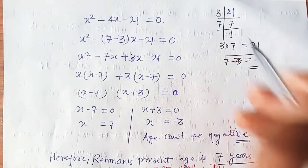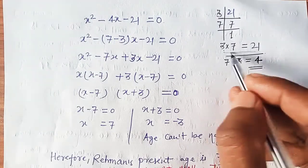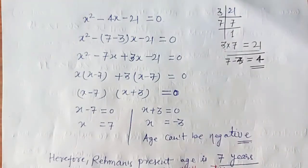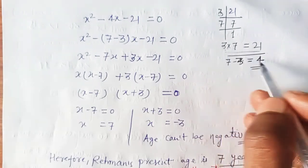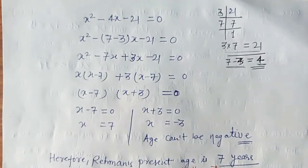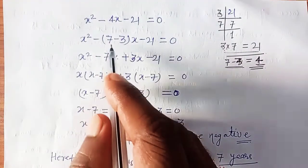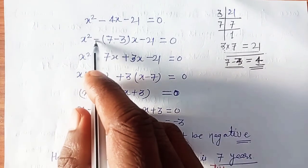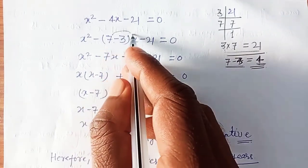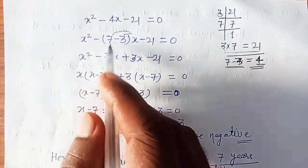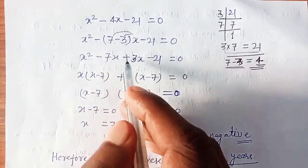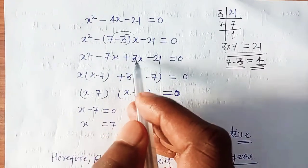To factor x squared minus 4x minus 21 = 0, we note that 21 = 3 × 7, and 7 minus 3 = 4. So we replace minus 4x with minus 7x plus 3x, giving x squared minus 7x plus 3x minus 21.